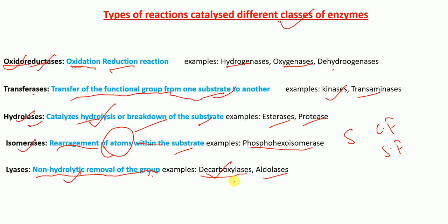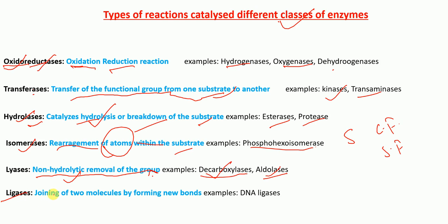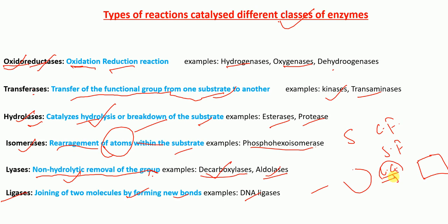The final class of enzymes are called ligases, also called synthetases. They catalyze synthetic reactions — they join two molecules to form a new molecule. An example is DNA ligase, which combines an insert and a vector to give a new clone.